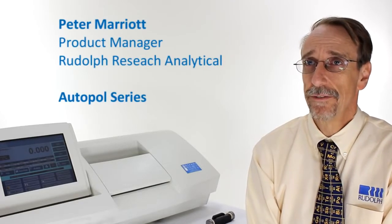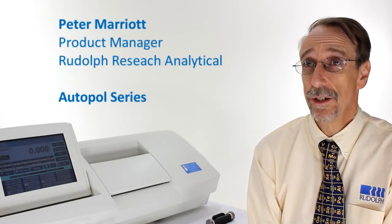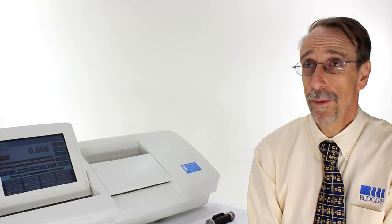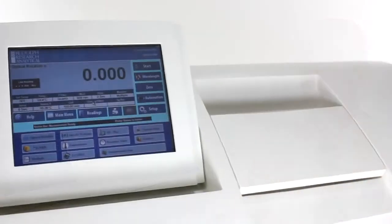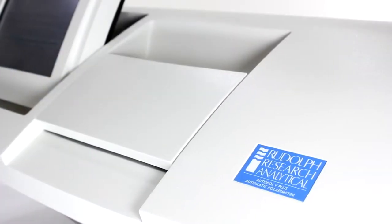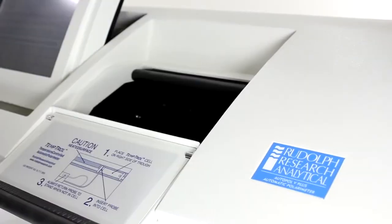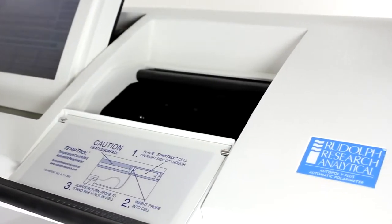This video covers how to fill cells and make measurements using a Rudolph Polarimeter equipped with exclusive and patented Temptrol heating and cooling systems. Although this demonstration is done using an Autopol 5 Plus, the procedure is similar for all models equipped with Temptrol.